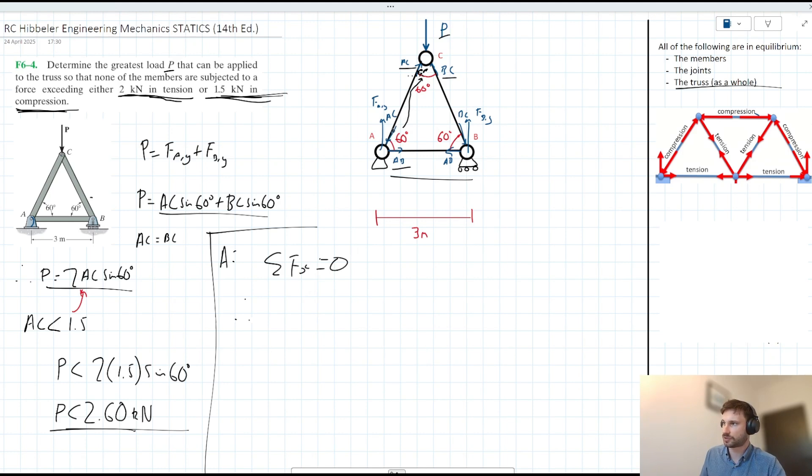So we could say AC cos 60 is equal to AB. Therefore, AB is smaller than 1.5 cos 60, since we're substituting in our 1.5 in here for AC. So we could say AB is less than or equal to 1.5 cos 60. Therefore, AB is less than or equal to 0.75, since that's what we obtain when we plug that into our calculator.